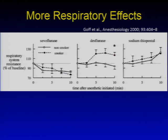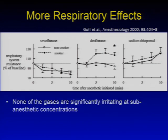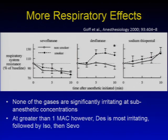Sevoflurane can actually act to bronchodilate as well. None of the gases are highly irritating at sub-anesthetic concentrations — when you add 0.2, 0.3, or 0.4 MAC of an agent, it's probably not going to have a whole lot of effect, and that may even hold up to 0.6 or 0.7 MAC. But when you get over 1 MAC, desflurane becomes the most irritating to the airways, followed by isoflurane and then sevoflurane.